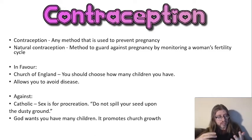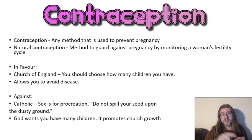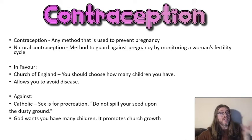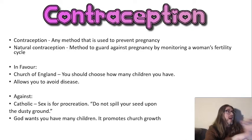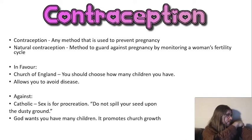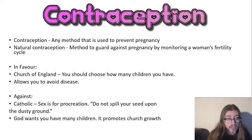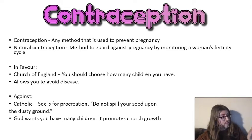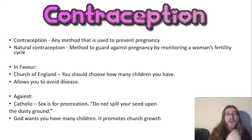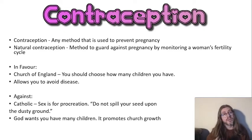Contraception includes hormonal methods and barrier methods. Hormonal methods are tablets, pills, patches, the implant - anything that releases a hormone to stop the body getting pregnant. Those at the moment are exclusively taken by women.